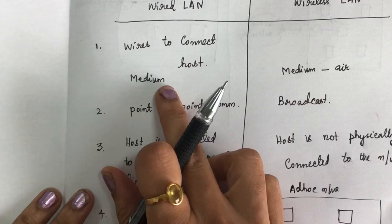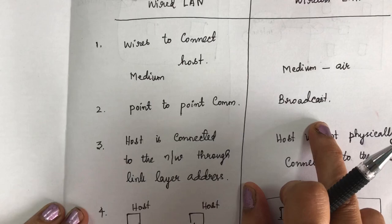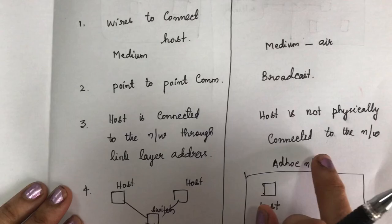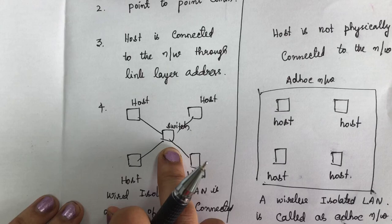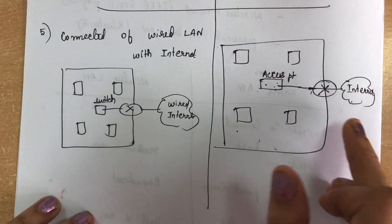To summarize the differences: first, medium — wired LAN uses wires, wireless uses air. Second, wired uses point-to-point communication, wireless uses broadcast. Third, wired uses link layer addressing; wireless is not physically connected to the network. Fourth, wired uses a switch, while wireless uses an ad hoc network where all devices can communicate freely. Fifth, wired LAN connects to the internet via a router, while wireless LAN uses a router plus an access point that acts as a glue between wired and wireless environments.